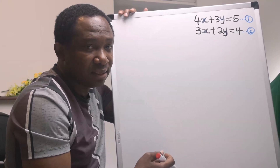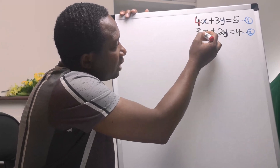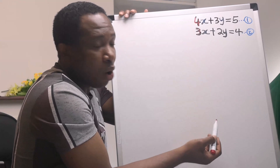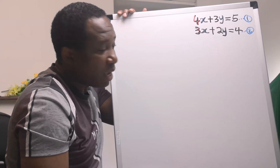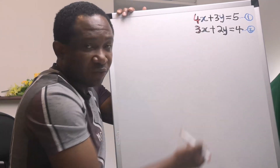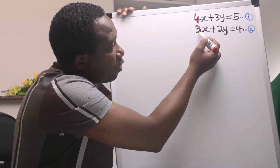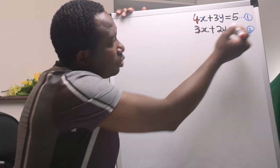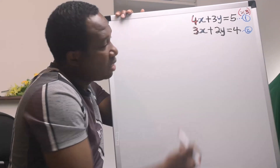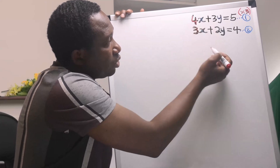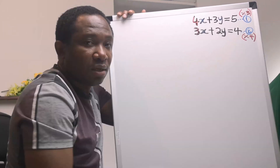Next, decide — that is, make a choice — to use either the coefficient of x in equation 1 and 2, or the coefficient of y in equation 1 and 2. Here, I am going to make use of the coefficient of x in equation 1 and 2. Next, use the coefficient of x in equation 2 to multiply everything in equation 1. Then use the coefficient of x in equation 1.